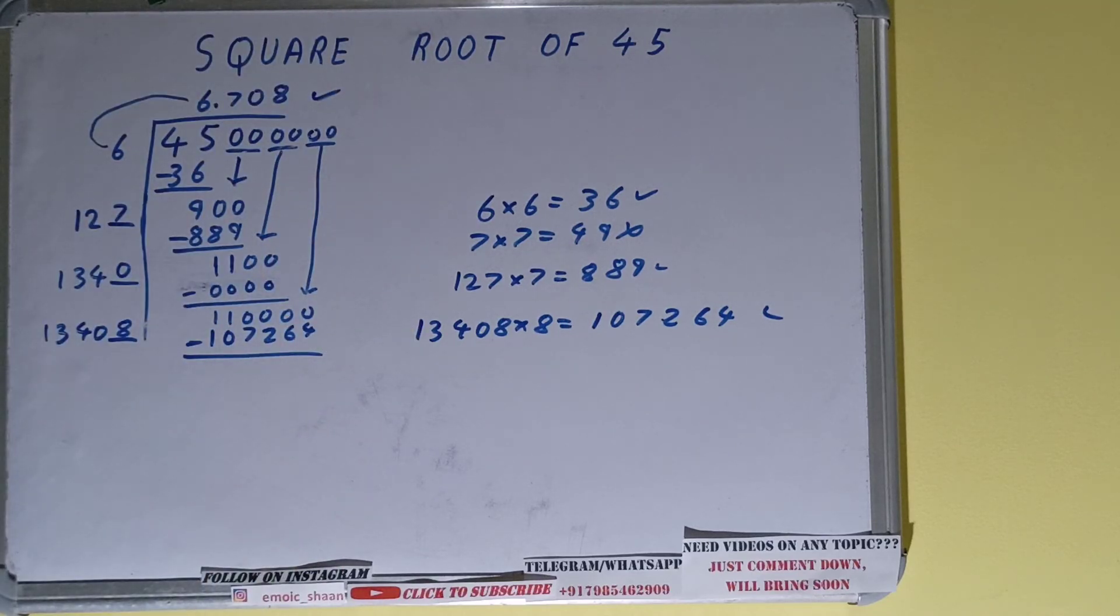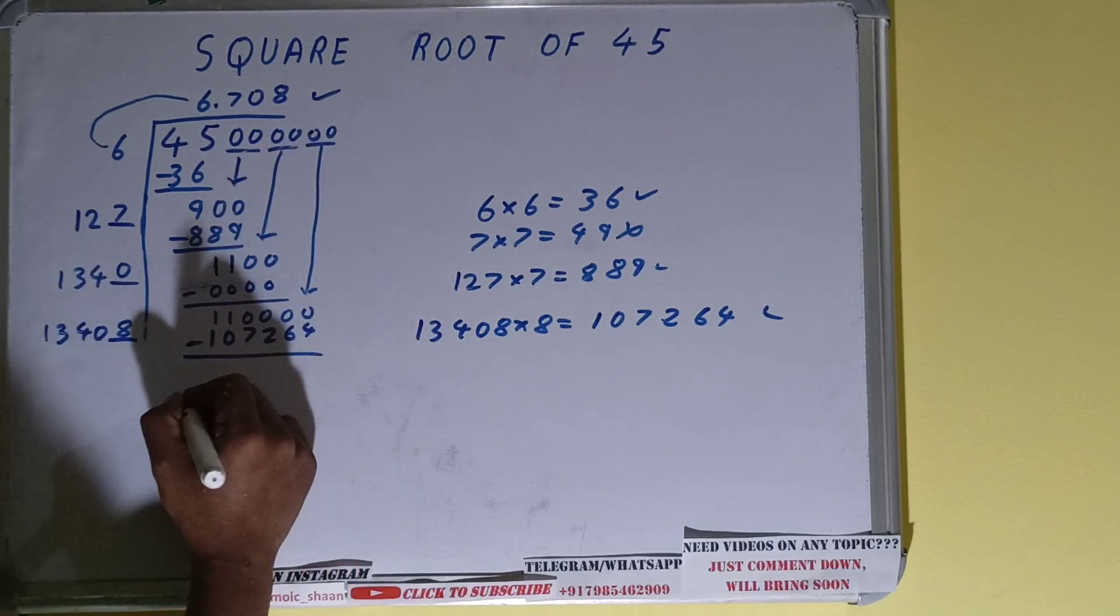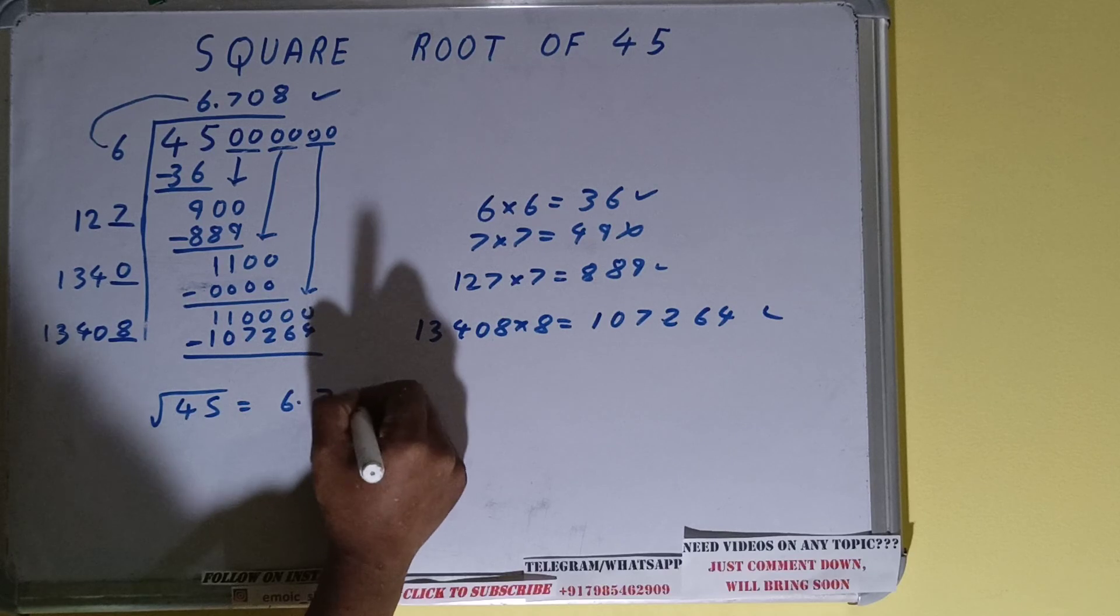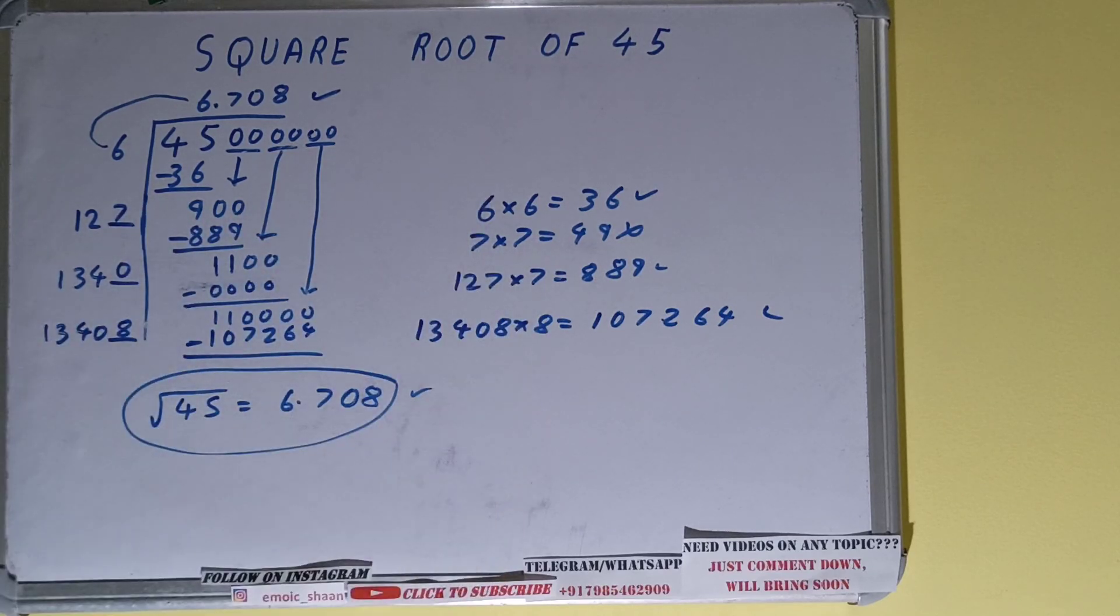Right here what you just need to do is write the answer. So square root of 45 is 6.708. That's it. So this is all about square root of 45. If you found the video helpful, please do the like button, do consider subscribing, and thanks for watching.